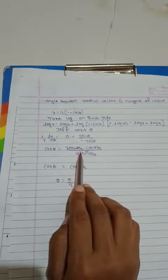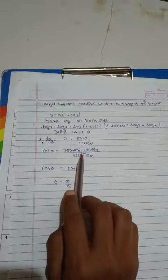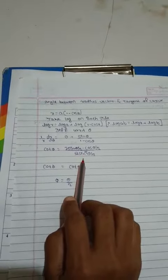Sin theta is equal to 2 sin theta by 2 into cos theta by 2. 1 minus cos theta is equal to 2 sin square theta by 2.